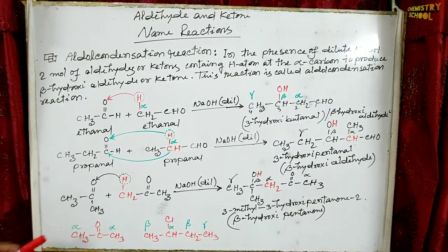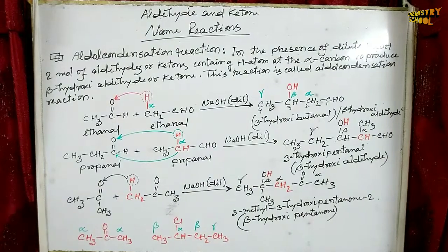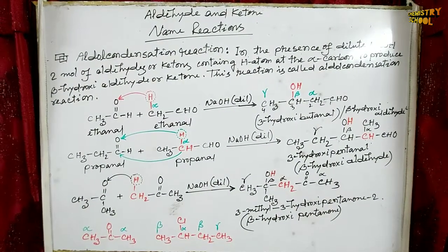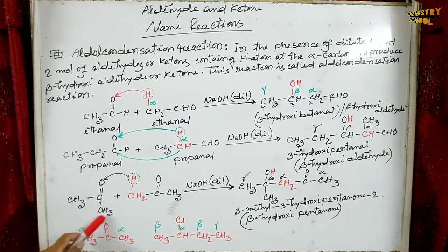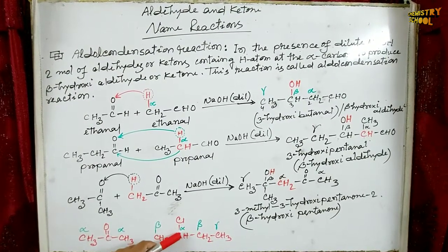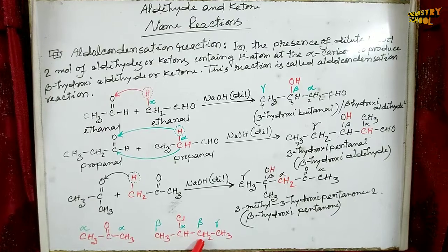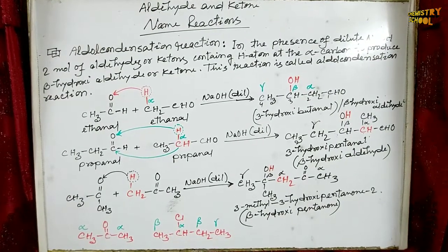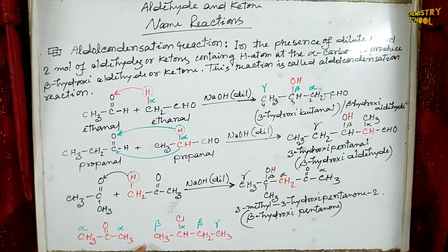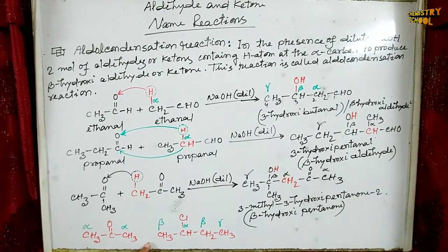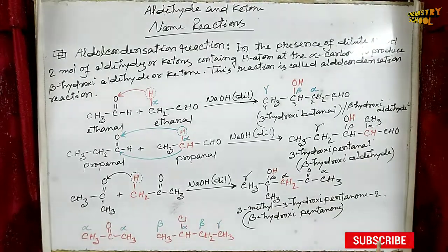Hello my dear students, today I am going to teach you name reactions — this is the last part of aldehyde and ketone. To study the name reactions, you have to know about alpha carbon, beta carbon, and gamma carbon. The carbon bonded with the functional group of an organic compound is called alpha carbon, the second is beta carbon, and the third is gamma carbon. There may be one, two, or three alpha carbon atoms in an organic compound.